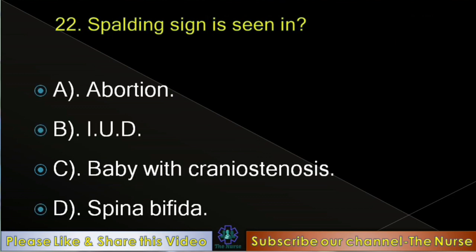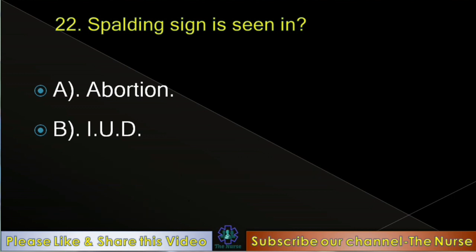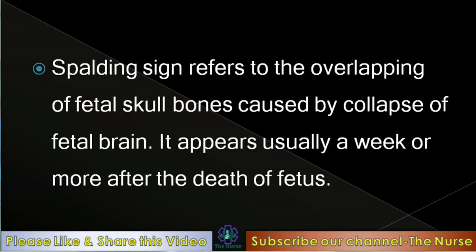Next question: Spalding sign is seen in — abortion, intrauterine death, baby with craniostenosis, or spina bifida. Correct answer: Intrauterine death (IUD). Spalding sign refers to the overlapping of fetal skull bones caused by collapse of the fetal brain. It appears usually a week or more after the death of the fetus.